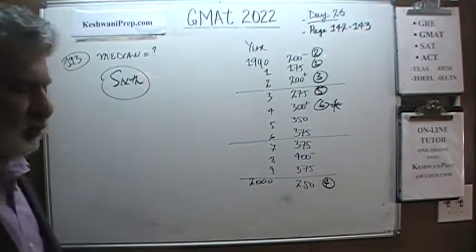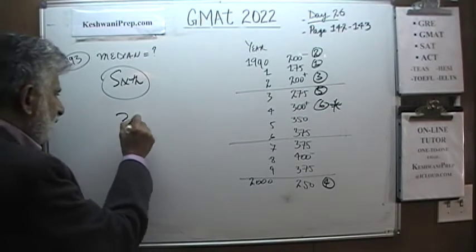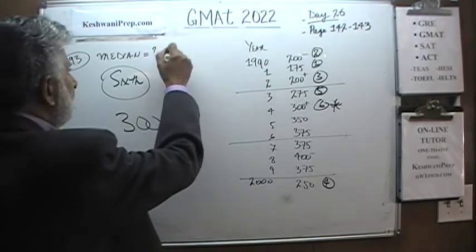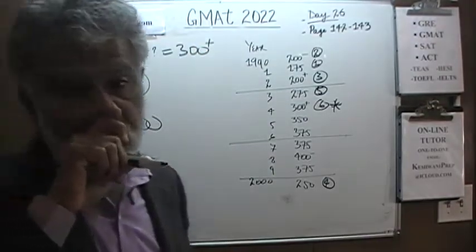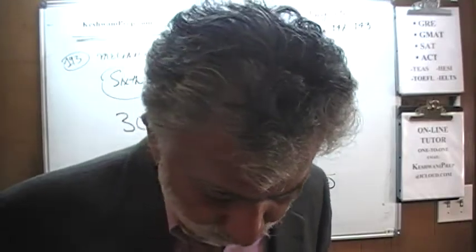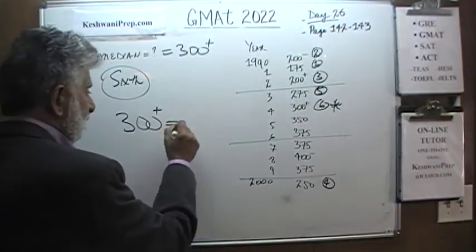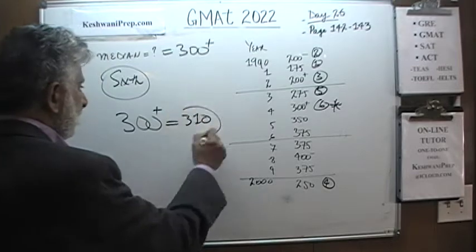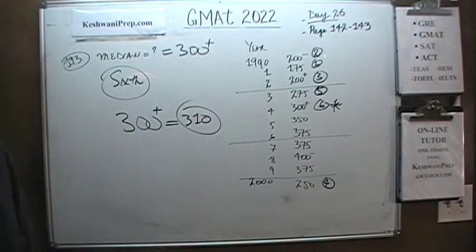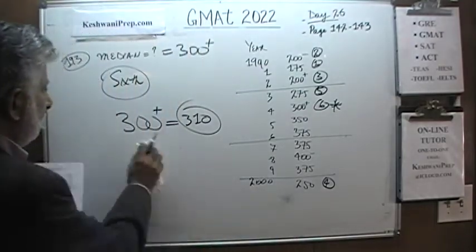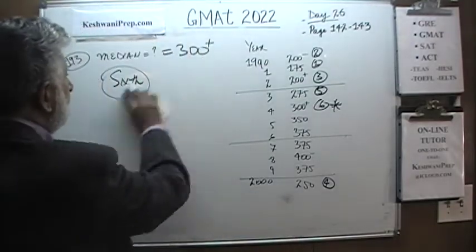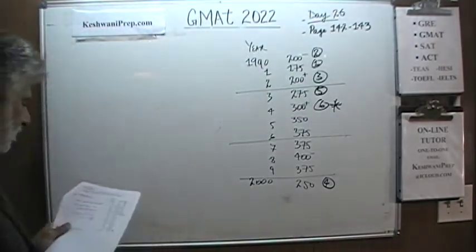So our median is something a little over 300. Look at the answer choices and find the one that is a little over 300 — that's our answer. Don't try to do it precisely; that takes too much time. There is only one answer choice that is a little bit more than 300, and that's all we care about. So let's take problem 194.